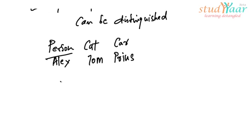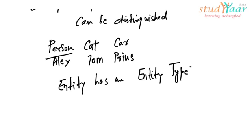An entity has an entity type. An entity type is basically a specification of that entity. It defines what are the characteristics of that entity.